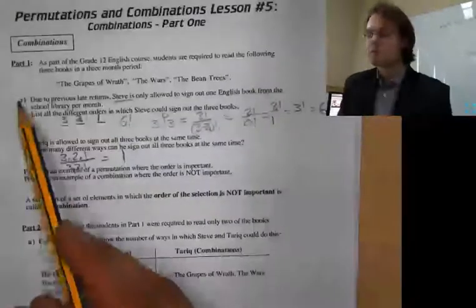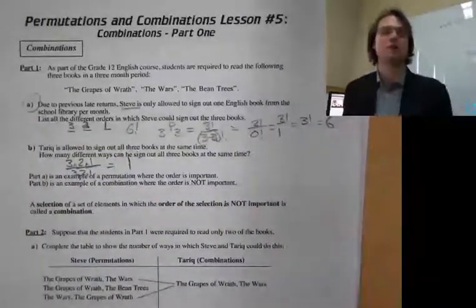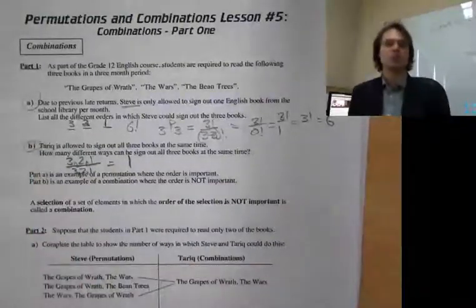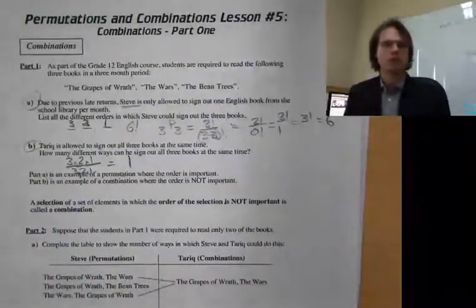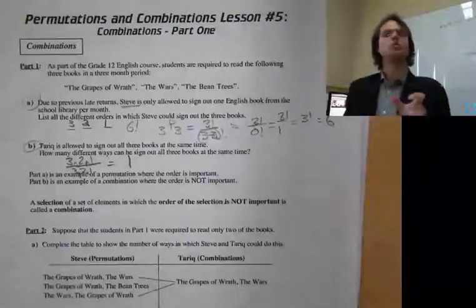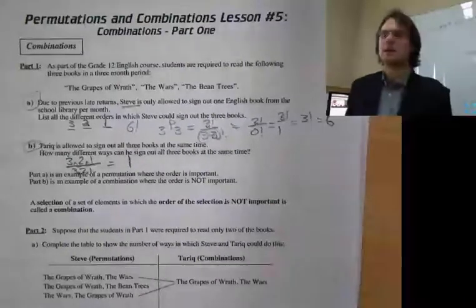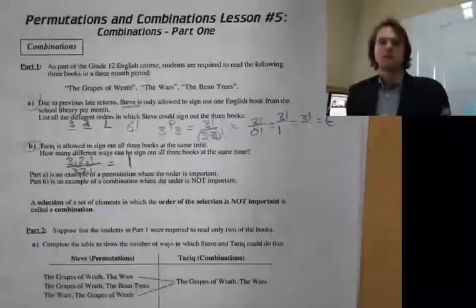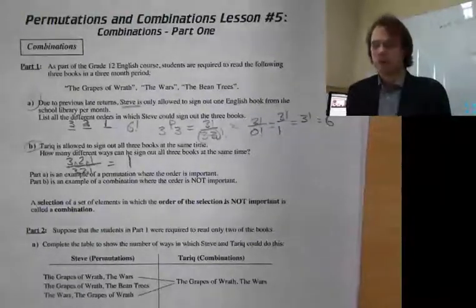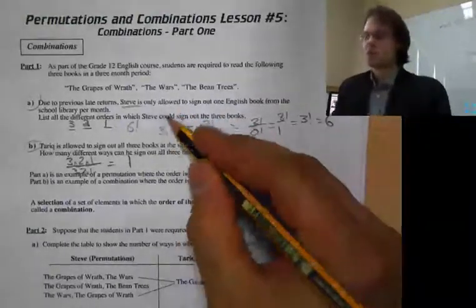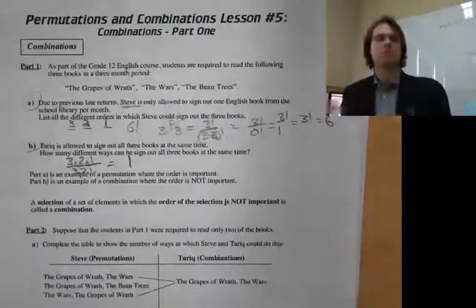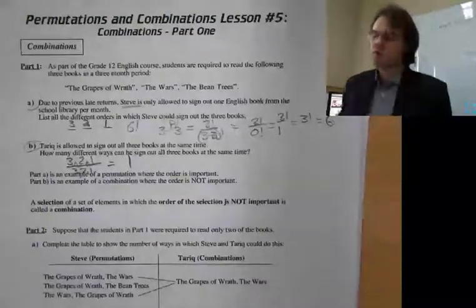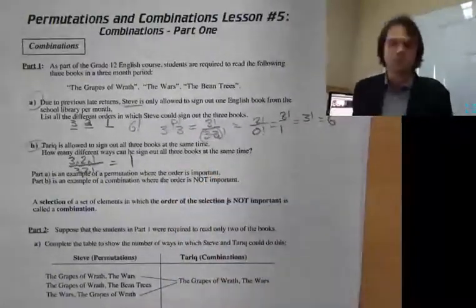Part A is an example of a permutation. Part B is an example of a combination. In a combination, order does not matter, and they'll use words like 'select' instead of 'pick.' I like to think of it: permutation starts with a P — it's for picky people, order matters. Combination starts with a C — you just choose whatever.